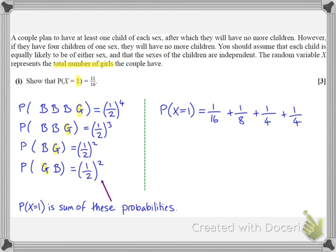So I'll just, because this is a show that question and we're given the answers, I'll show a line of working. So I'm going to make common denominators. So 8 times 2 would be 16, so do the same to the numerator. 1 times 2 is 2, so that's 2 sixteenths. And then for these quarters, 4 times 4 would be 16, so do the same to the numerator. That's going to give me 4 sixteenths and 4 sixteenths. And then if I add those up, 1 add 2 would be 3, add 4 is 7, add 4 is 11. So I do indeed get 11 sixteenths, which was the required value.